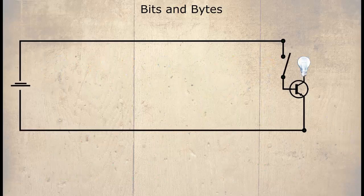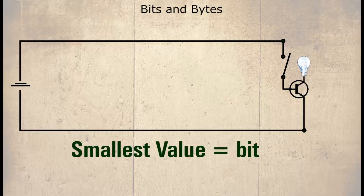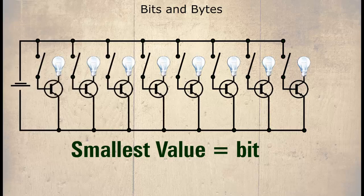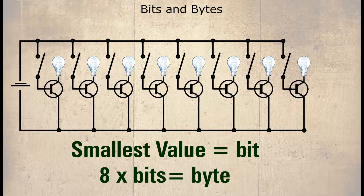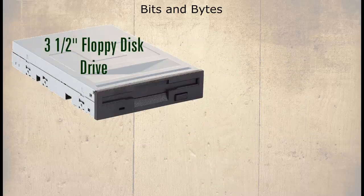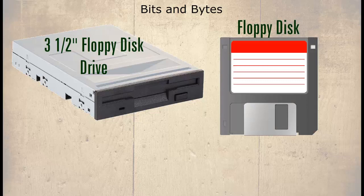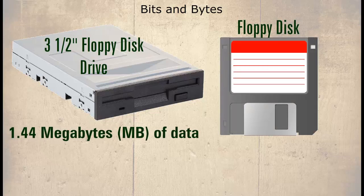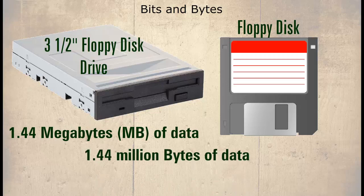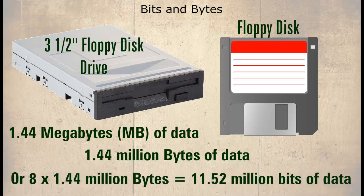Now let's break this down. We started with just one transistor — this was the smallest value, which we call a bit. We then added further transistors to give us 8 transistors, or 8 bits. 8 bits is equal to 1 byte, and storage capacity is usually measured in bytes. The floppy disk drive stores information on a floppy disk and can store 1.44 megabytes of data on each disk, or 1.44 million bytes of data. If we wanted to know how many bits, we would multiply by 8, giving us 11.52 million bits.